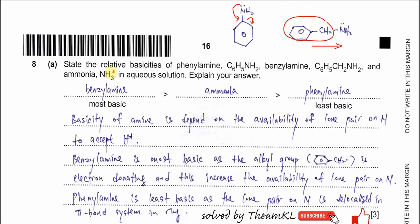We need to determine which one is most basic. The benzene ring with CH2 is an electron donating group to the nitrogen, making the lone pair more available — so benzylamine is the most basic. Ammonia is more basic than phenylamine, and phenylamine is the least basic because its lone pair is least available.